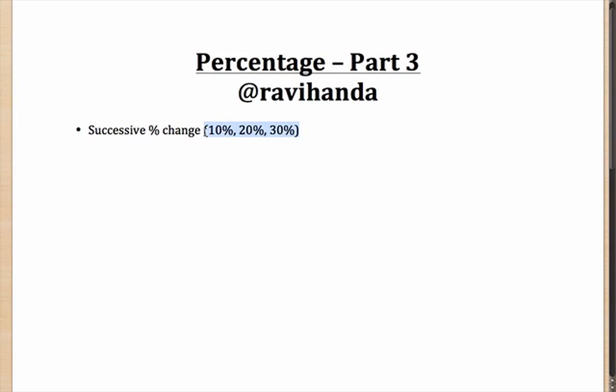A lot of people think that you can simply add them up. You can simply say that the total change in case of 10%, then 20%, then 30% is effectively 10 plus 20 plus 30 or 60%. But if that is what you think, you are wrong.